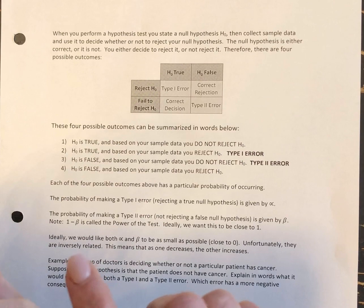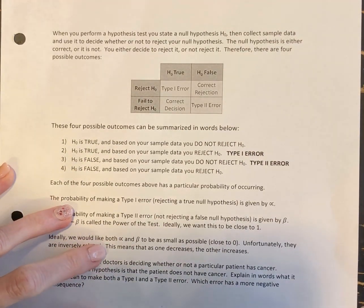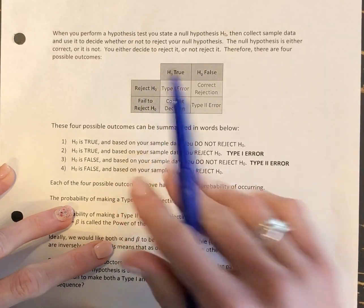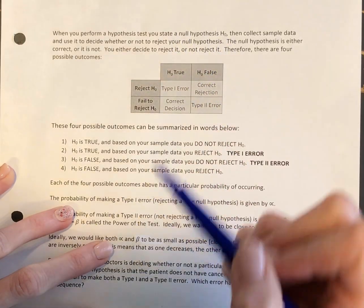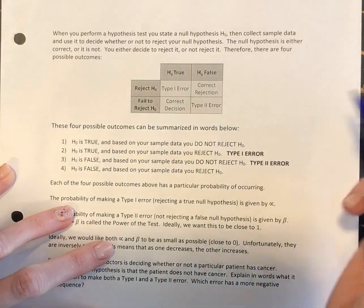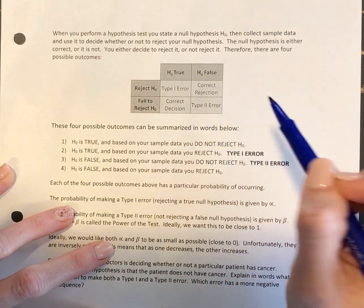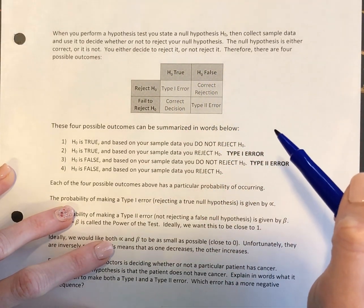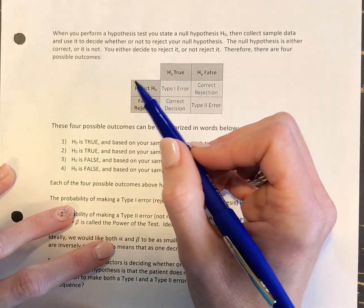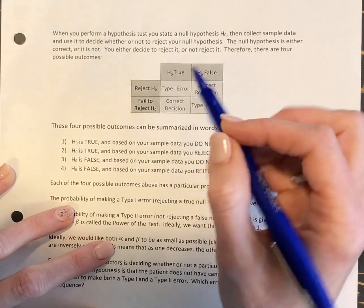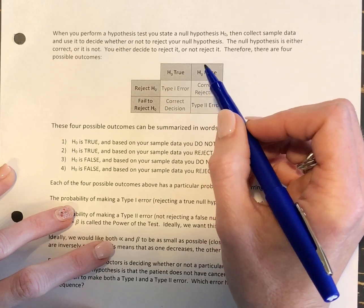In this video we're going to look at Type 1 and Type 2 errors. These are errors that might result when we perform a hypothesis test. We're going to determine a null hypothesis for our question of interest, then collect sample data and use that data to decide whether or not to reject our null hypothesis.